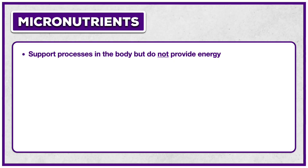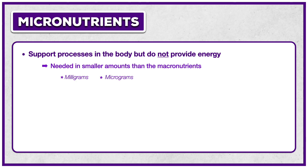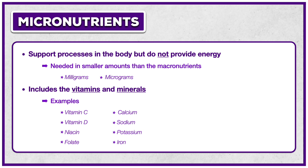Moving on to micronutrients, they support processes in the body but do not provide energy — put another way, they're calorie-free. Micronutrients are needed in smaller amounts than macronutrients, so they're measured in milligrams and micrograms instead of grams. Micronutrients include the vitamins and minerals. Some vitamins, like vitamin C and vitamin D, are easily recognizable because we refer to them in a way that has the word vitamin in it. Other vitamins are more commonly referred to by their scientific names, such as niacin for vitamin B3 and folate for vitamin B9. The minerals only have a scientific name, and many of them, like calcium, sodium, potassium, and iron, are easily recognized by the general public.